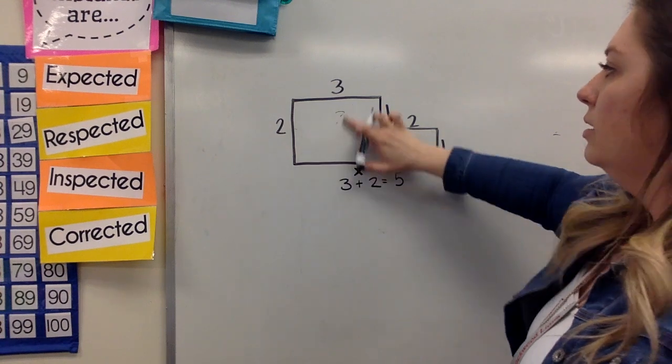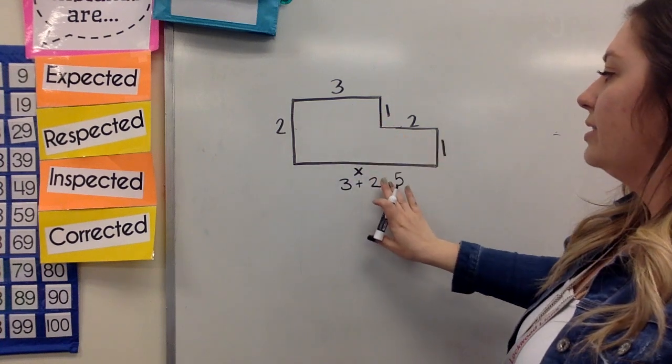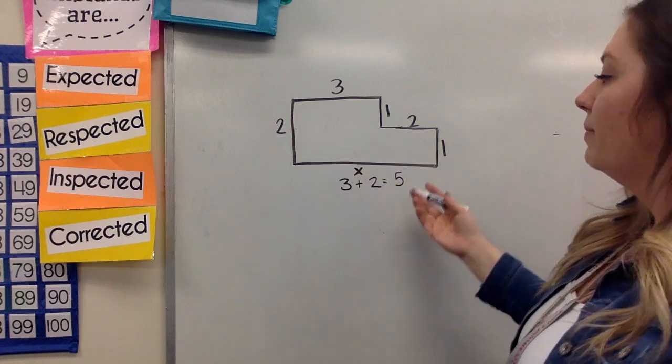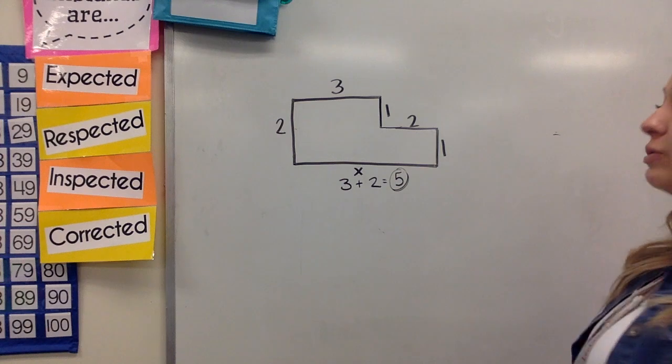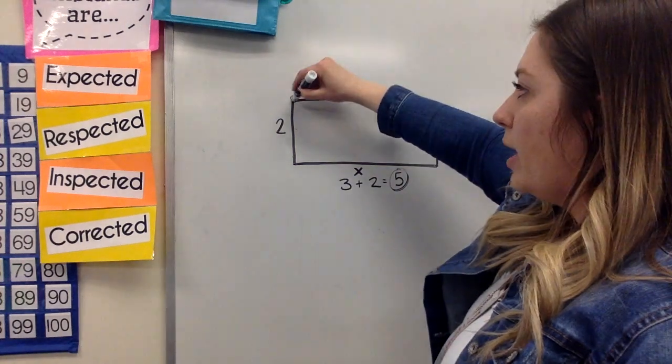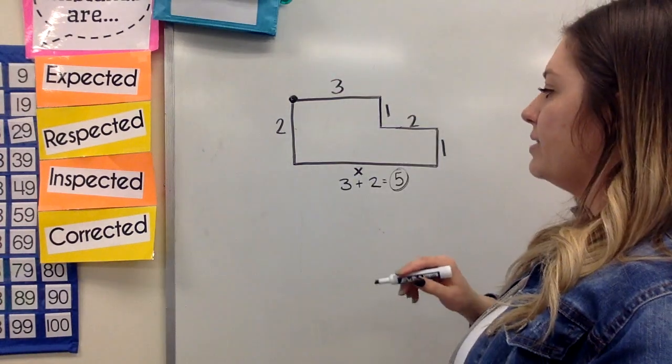I can erase this. Quite honestly, I'll just leave those for right now. I know that this side length right here is five. So I found my missing side, and then I can go through the process of adding my sides up.